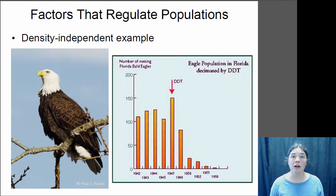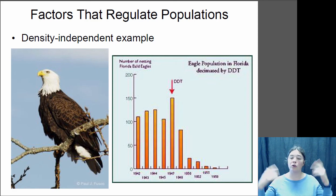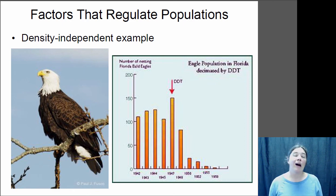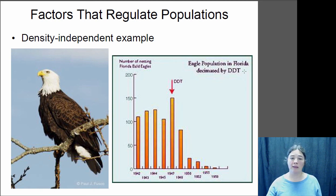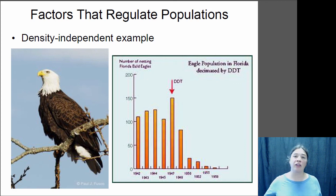Here's an example of a density independent factor. In the 1940s, the pesticide DDT was introduced — thought to be a miracle chemical to eliminate mosquitoes with no ill effects. It turned out DDT is extremely toxic to birds, making their eggshells very thin so they crack when the mother sits on them. When DDT was introduced to Florida, the eagle population plummeted. It wouldn't have mattered whether there were 50 or 5,000 eagles — the DDT has the same effect regardless of population size.